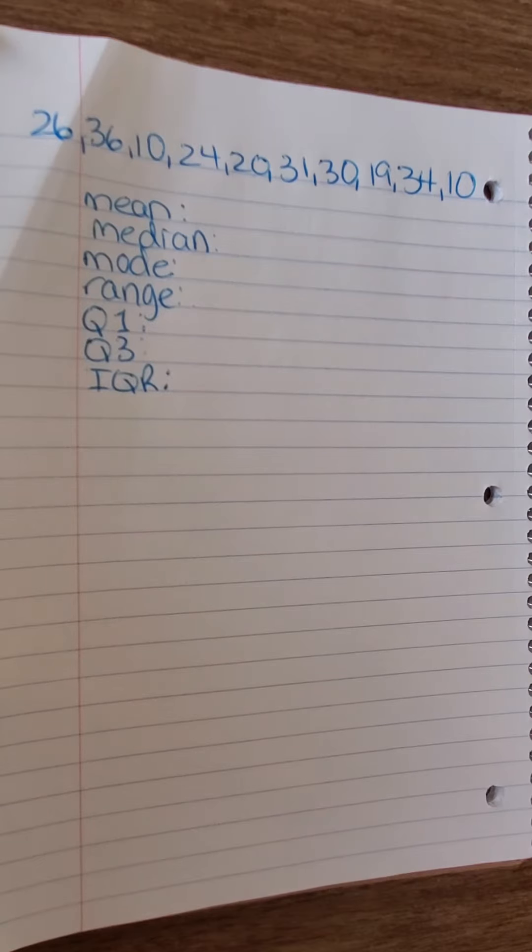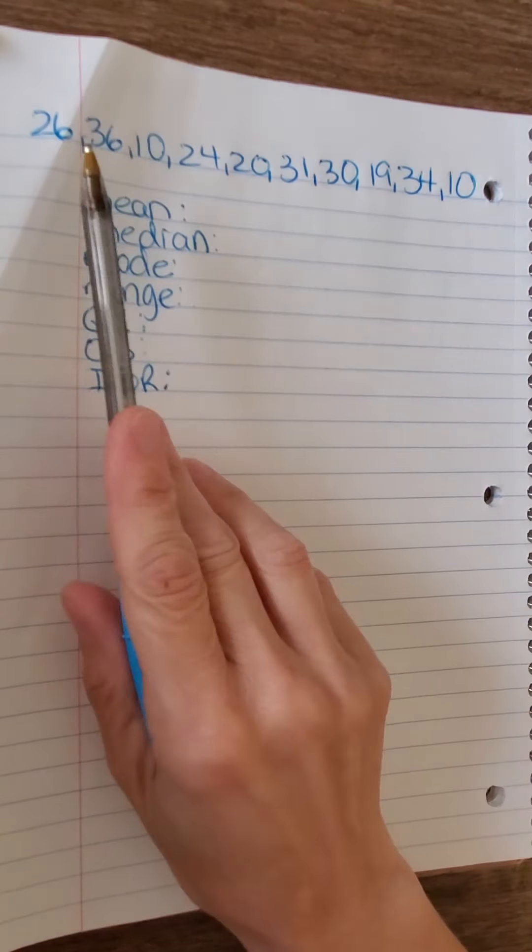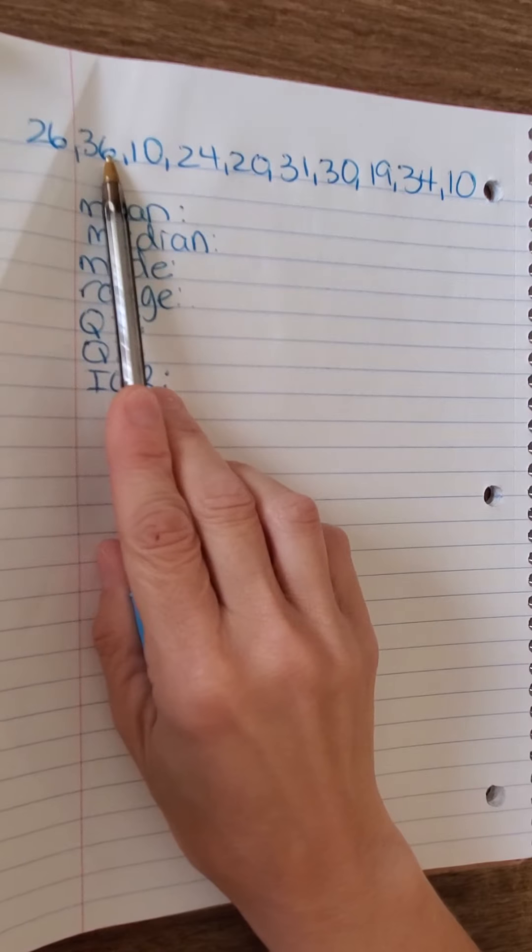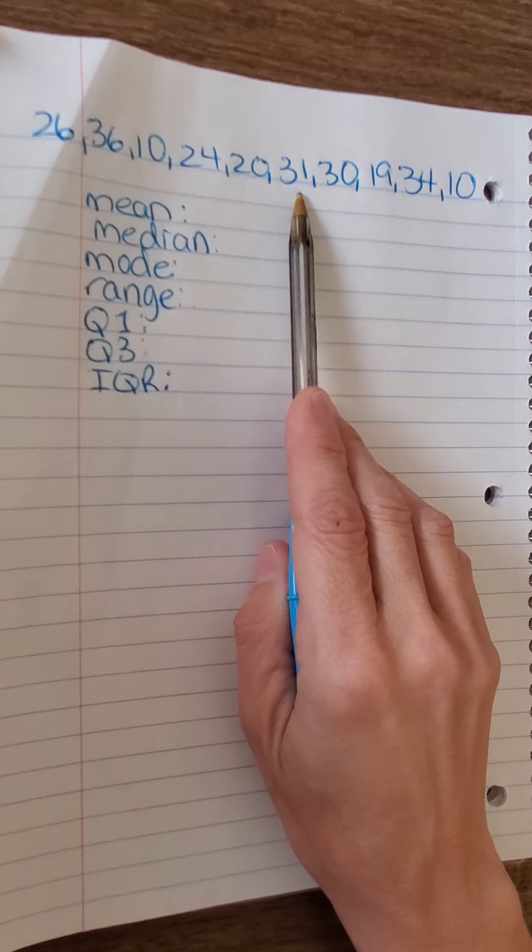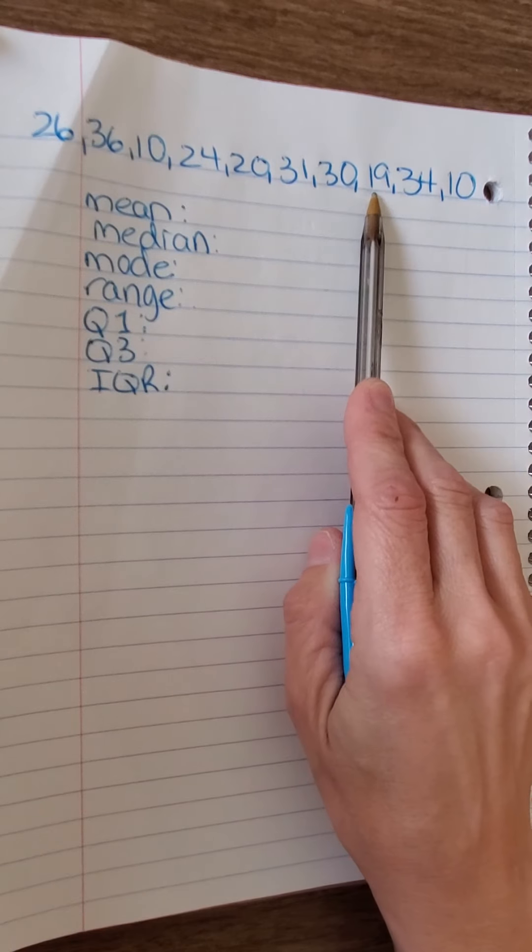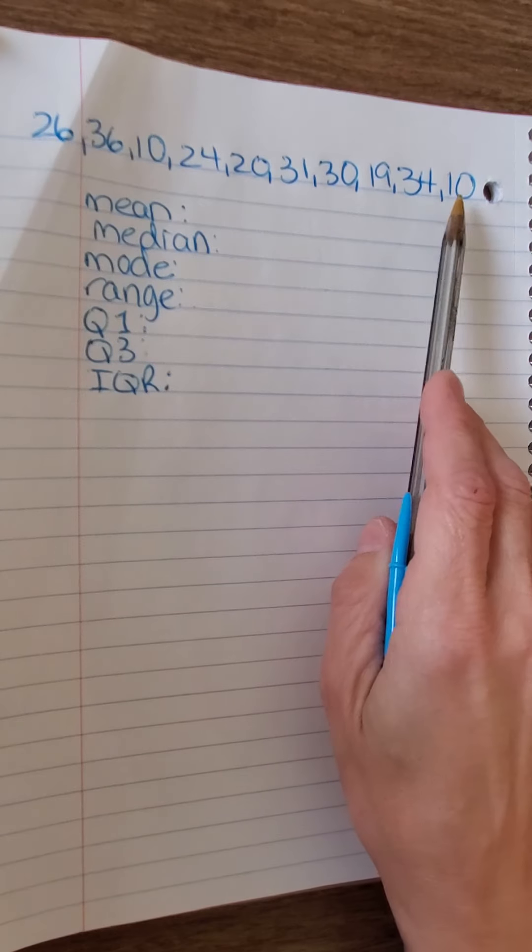I had given you the set of data, including the numbers 26, 36, 10, 24, 20, 31, 30, 19, 34, 10.